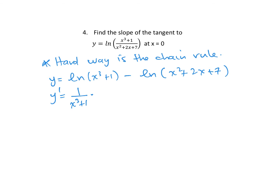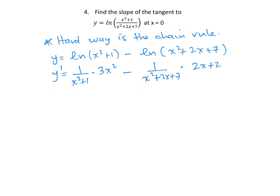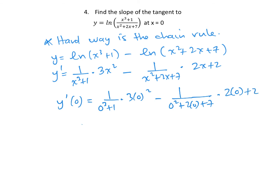Minus 1 over (x² + 2x + 7) times the derivative of that denominator, which is 2x + 2. I'm not going to simplify further because I just want the slope at x equals 0. Substituting x = 0 into the first group gives 0, and the second group gives 1 over 7 times 2, so the slope is negative 2 over 7.